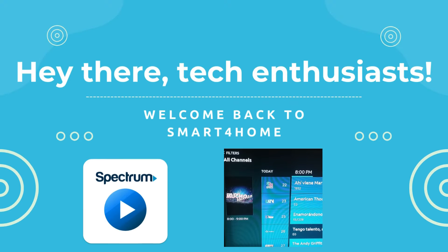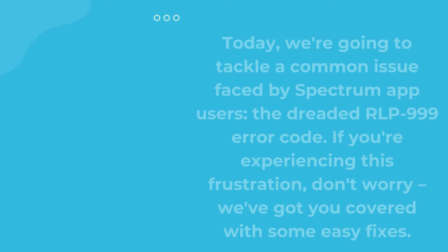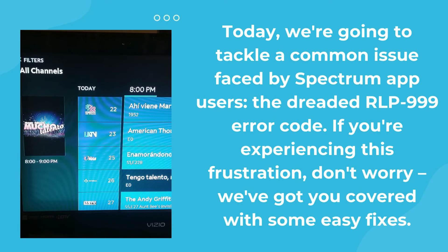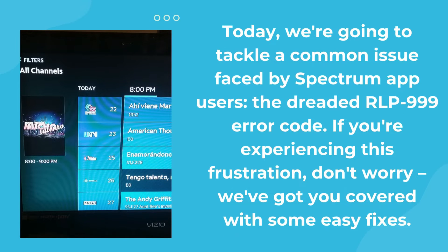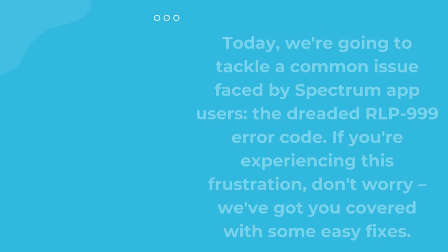Hey there tech enthusiasts, welcome back to Smart4Home. Today, we're going to tackle a common issue faced by Spectrum app users, the dreaded RLP 999 error code. If you're experiencing this frustration, don't worry, we've got you covered with some easy fixes.